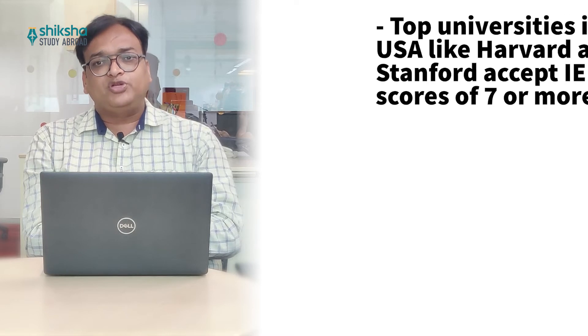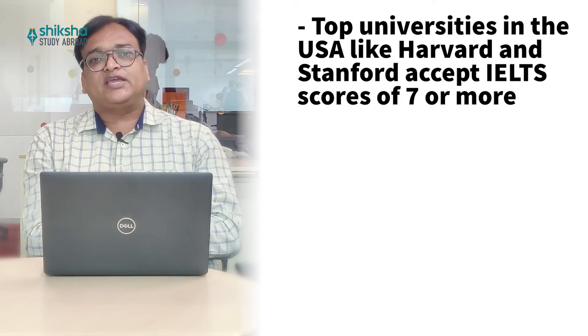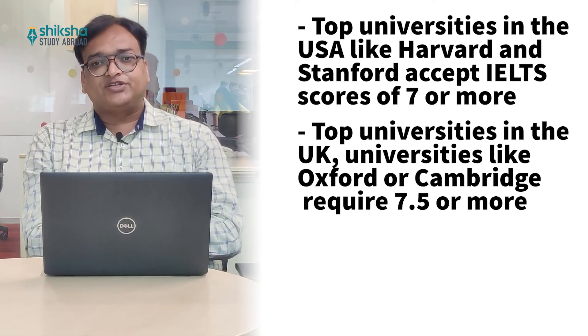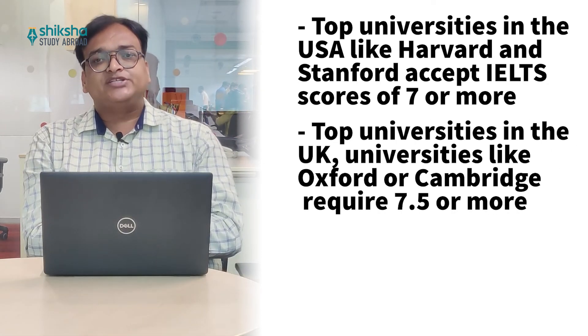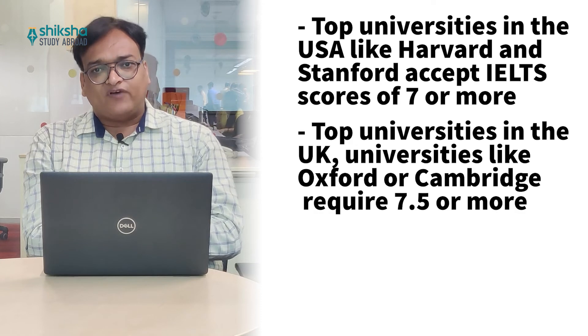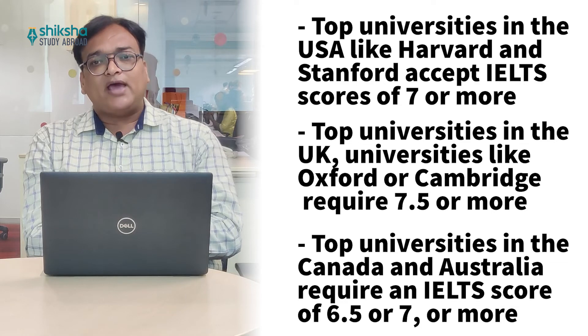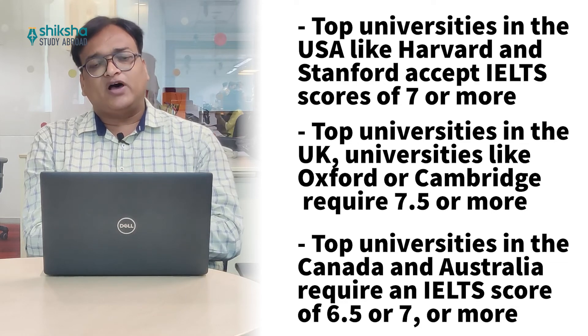What is a good IELTS score? Every country has an IELTS cut-off according to their academic requirements. Top universities in the USA, like Harvard and Stanford, take an average IELTS score of 7 or more. Universities in the UK, like Oxford and Cambridge, take an IELTS score of 7.5 or more. To get into top universities in Canada and Australia, you require an IELTS score of 6.5 or 7 or more.